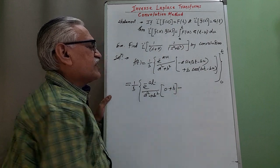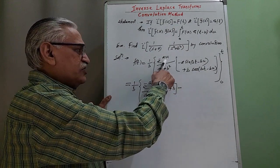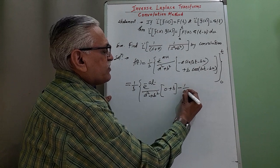Then minus u is 0, e raised to 0, we get 1 upon a square plus b square.